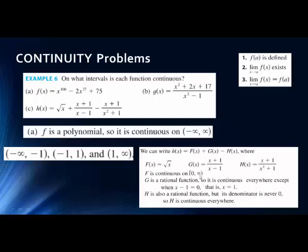The second piece is a rational function with x minus 1 in the denominator. We set that equal to zero and solve, giving x equals 1. So this part is continuous everywhere except x equals 1.